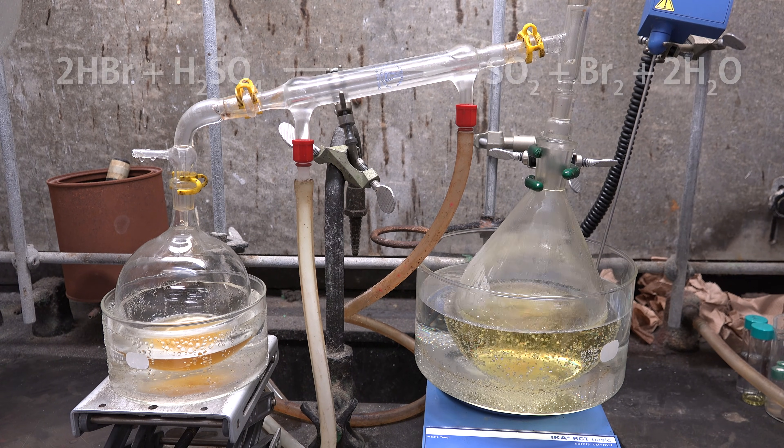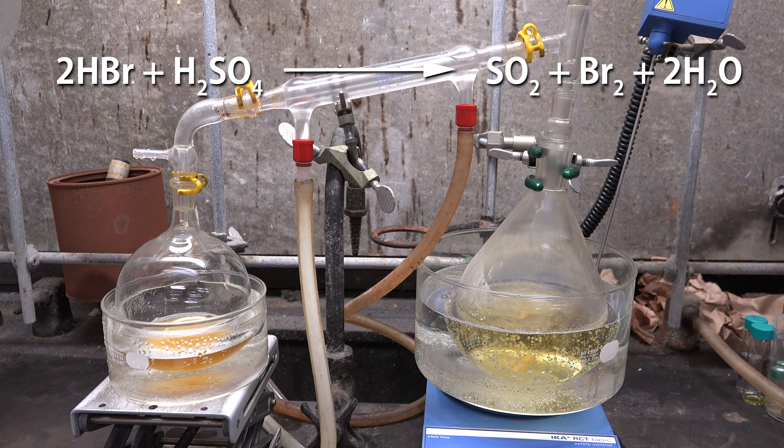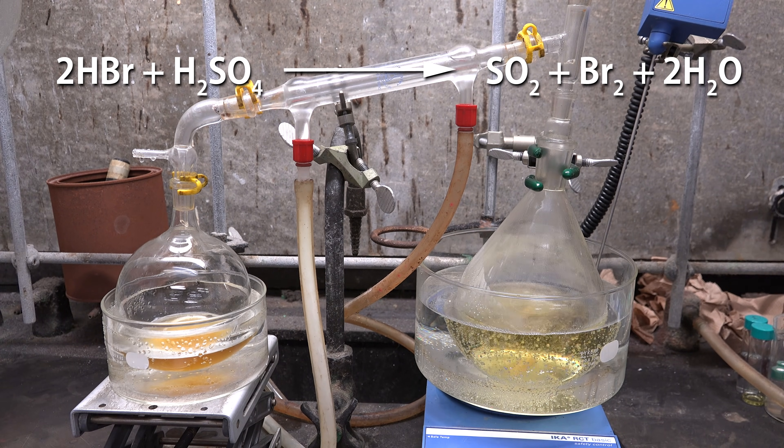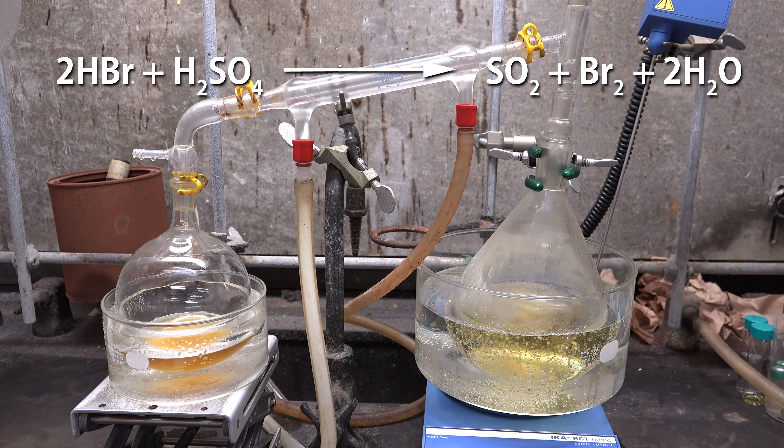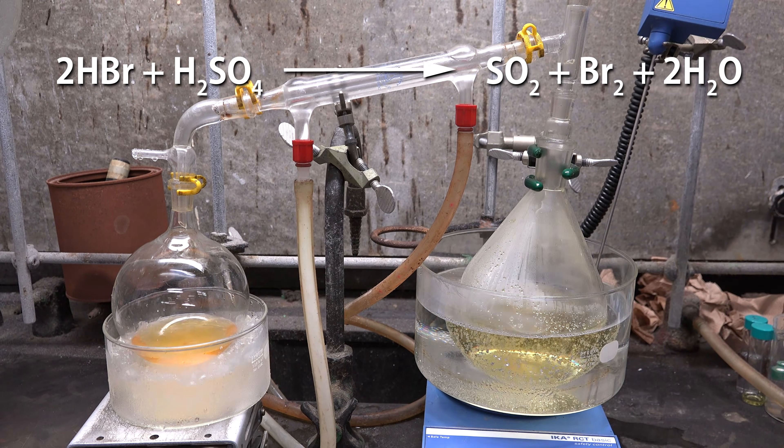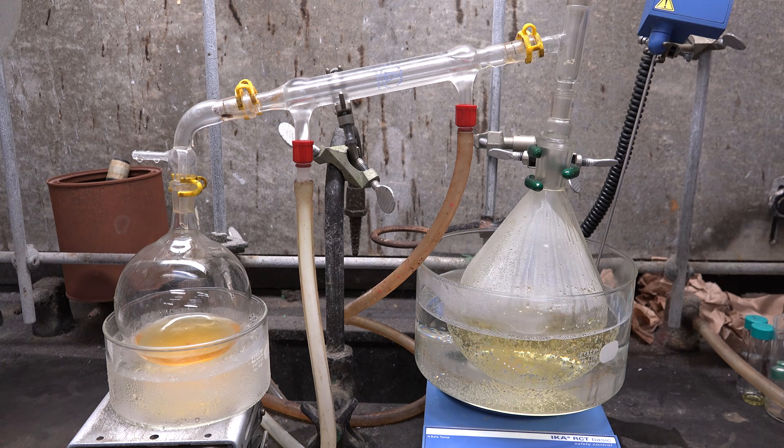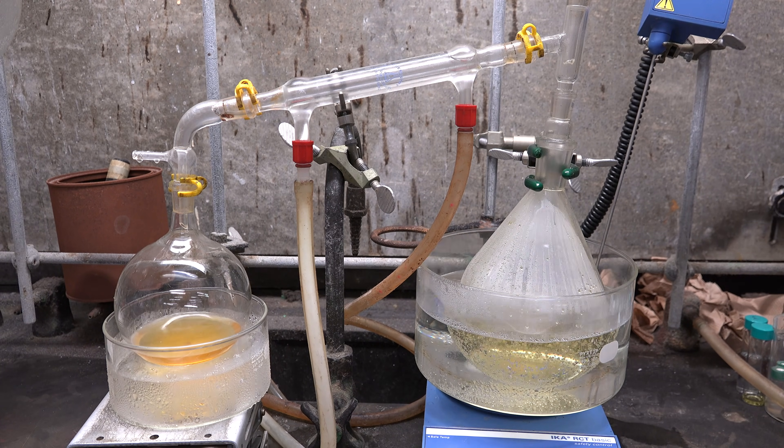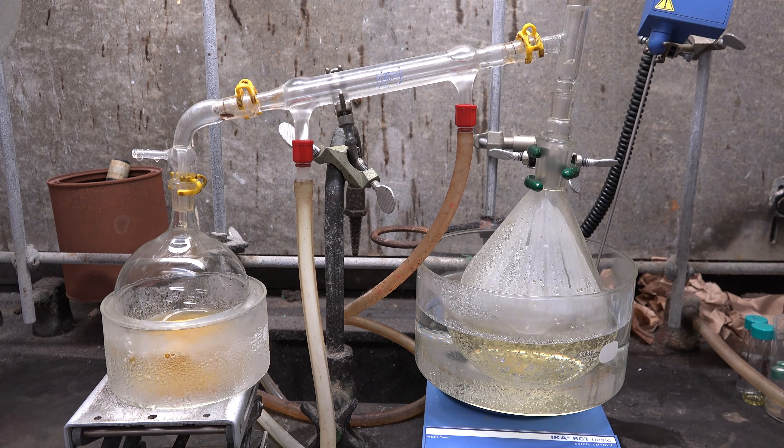Another side product is bromine itself. Hydrobromic acid reacts with sulfuric acid to create sulfur dioxide and small amounts of bromine. This explains the orange color of our distillate. Anyway keep running the distillation until nothing distills over when you reach a water bath temperature of 70 degrees celsius.